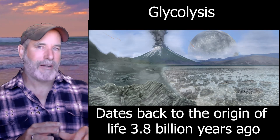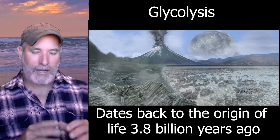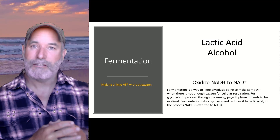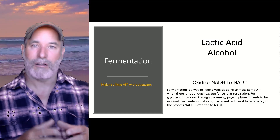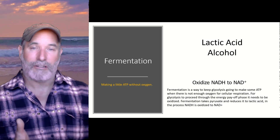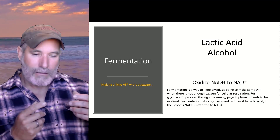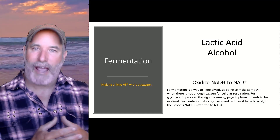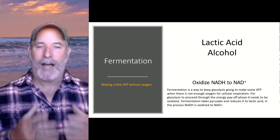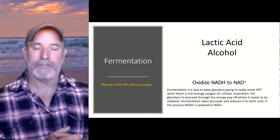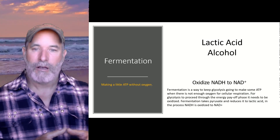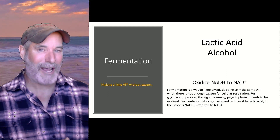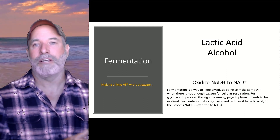Glycolysis is an ancient metabolic pathway shared by all living cells, and it's a way that you can get at least two ATPs from a molecule of glucose. For glycolysis to proceed, it's a redox reaction — you start to oxidize glucose molecules and eventually form two pyruvates. But if you're going to oxidize glucose, you need something to be reduced.